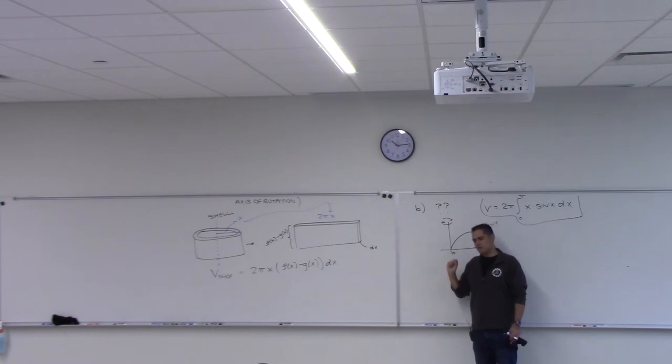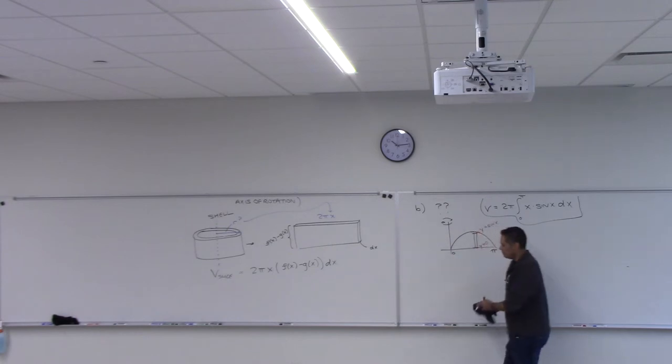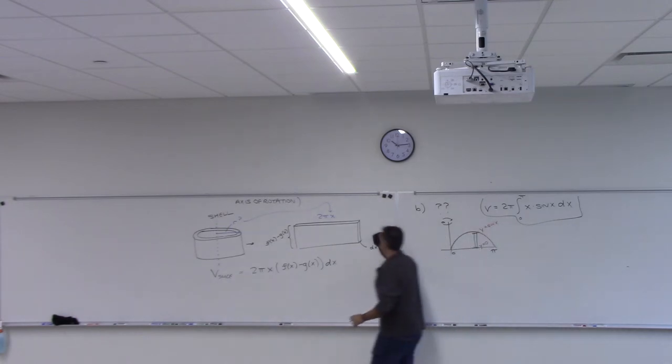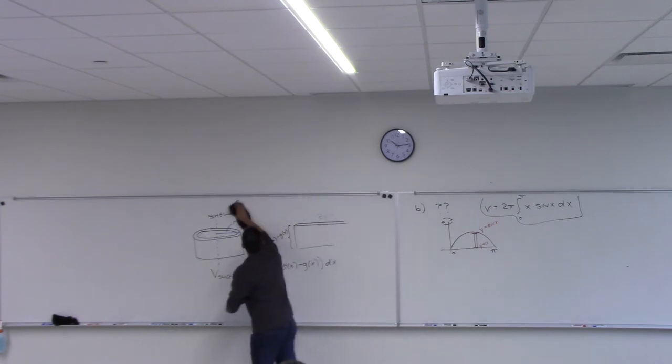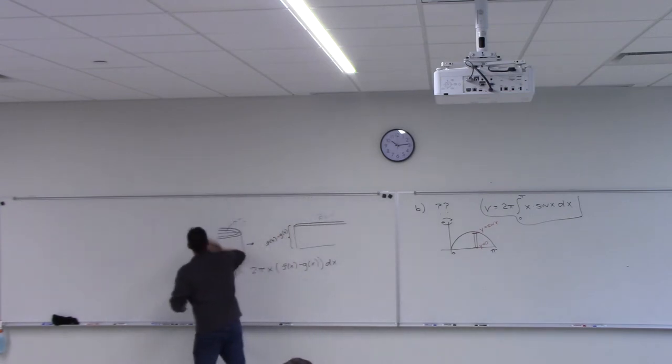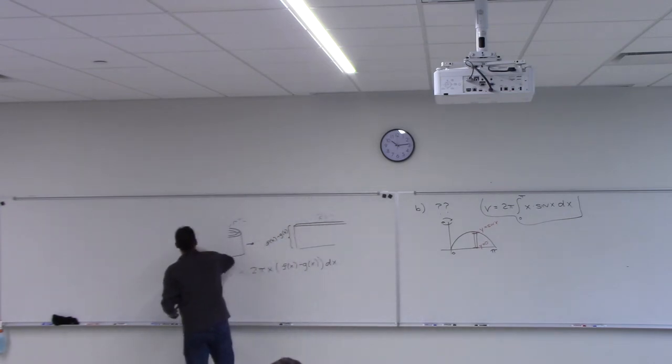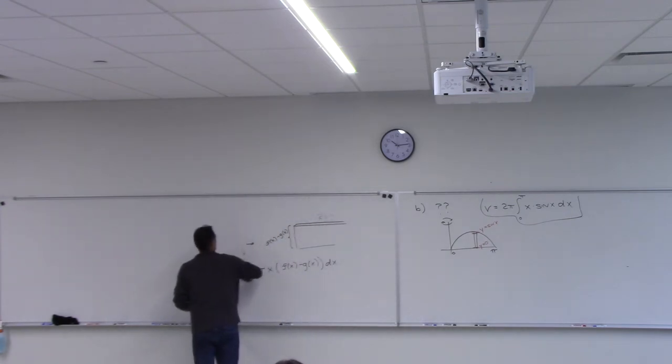The condition for shells is when your region is lending itself to vertical rectangles because it would be hard to do horizontal rectangles — it's hard to rewrite the function that way. So I'm forced to use vertical rectangles and being asked to rotate around the y-axis. They're parallel, so I've got to use shells.